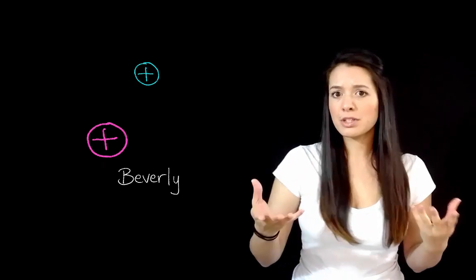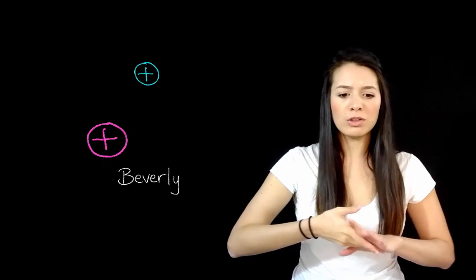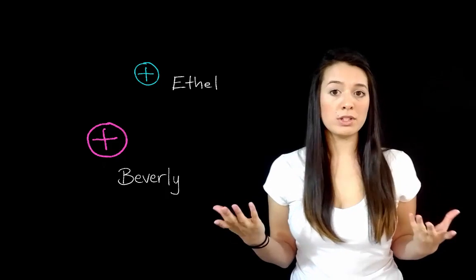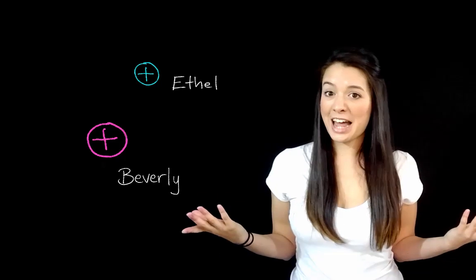And all of a sudden another charge comes into the vicinity of Beverly. It's a positive charge as well. And we can call this charge Ethel. So we've got Beverly and Ethel, two positive charges. So what's gonna happen?